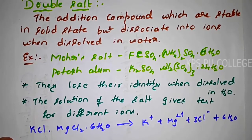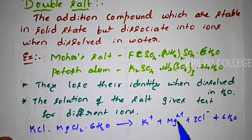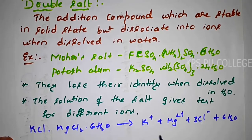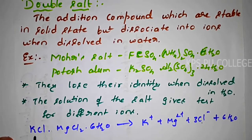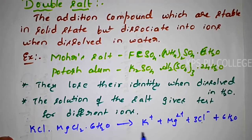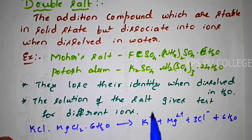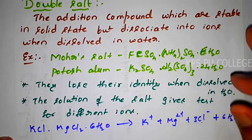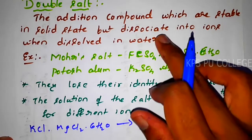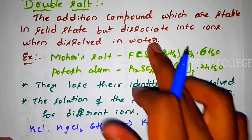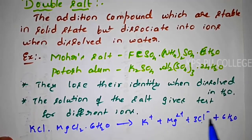So double salt is stable only in the solid state, but when dissolved in water they undergo dissociation and free ions are formed. K+, Mg2+, and Cl− are the different free ions formed.